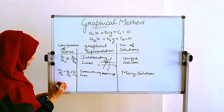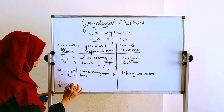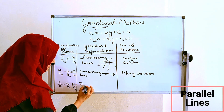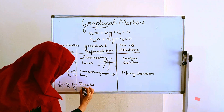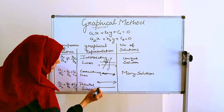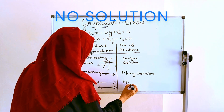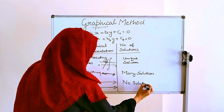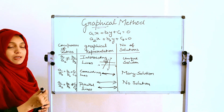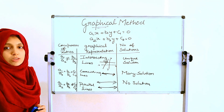The next case is when a1 by a2 equals b1 by b2 but is not equal to c1 by c2. In this case, we will get parallel lines. The graph of one equation will be parallel to the other — lines will be parallel to each other. So in this case, there will be no solution, because if the lines are not touching or crossing each other, we won't get a solution.